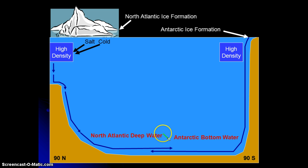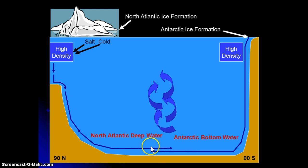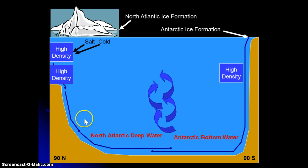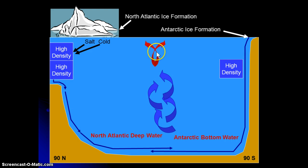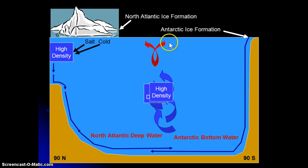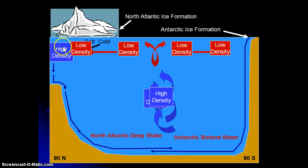The water travels along the seafloor and can collide with other water masses or land masses — any kind of obstruction — which drives the water upward. We have a convergence of water masses that drives this water towards the surface. As it comes towards the surface, we've gotten away from the poles, away from the cold areas. It gets heated, becomes less dense, starts to get fresh water inputs, becoming even less dense, and we get this divergence of our surface water, contributing to the surface layer of the ocean.